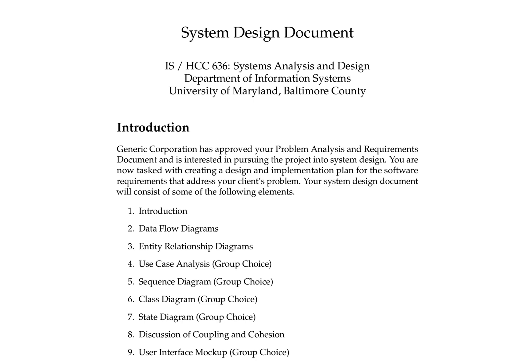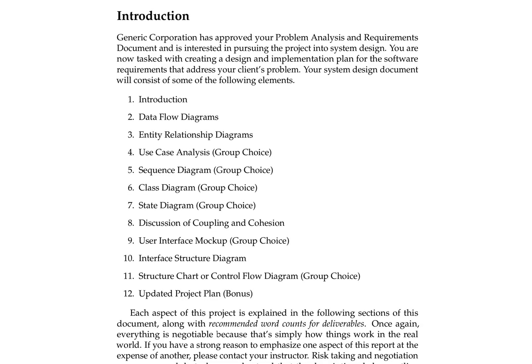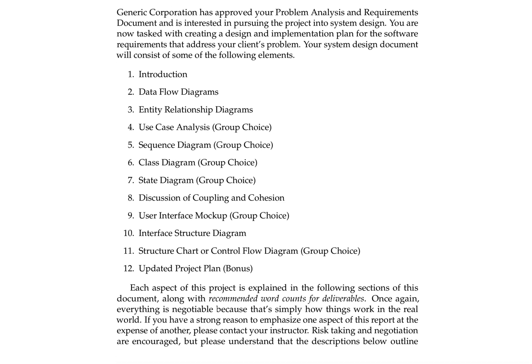From a grading standpoint, not all of the elements in this list are required. The introduction is required, the data flow diagrams are required, the entity relationship diagrams are required, as is the discussion of coupling and cohesion, and the interface structure diagram. Everything else is up to you — you get to choose two of the group choice options, and you can also choose to do the updated project plan as bonus material.